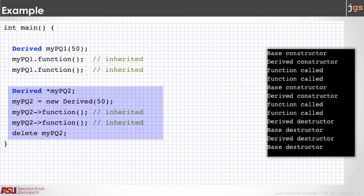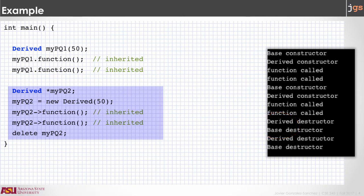We can call the function using the arrow operator, because the function is inherited from the base class into the derivative class. Finally, the destructors are going to be called. The delete instruction is going to call the destructor for the pointer object, and that call is going to trigger the destructor of the derivative class, which automatically is going to call the destructor in the base class. Notice that the order is different with destructors: first the destructor of the derivative class is called, and then the base destructor. When the main ends, the stack object is removed from memory, and again — first the destructor of the derivative class, and then the destructor for the base class.